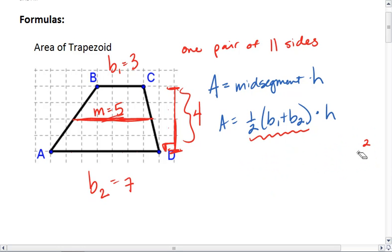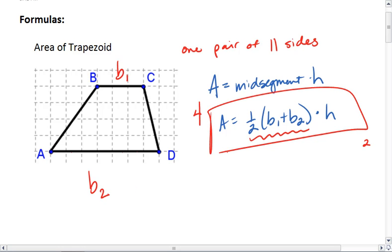What you need to write down is simply this. Label one parallel side as base 1, the other as base 2, and know that the area is one-half base 1 plus base 2 all times h.